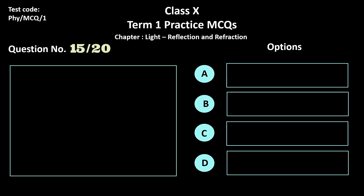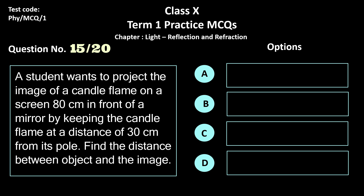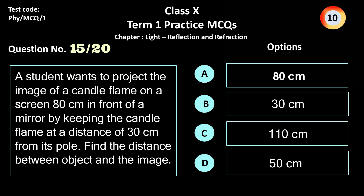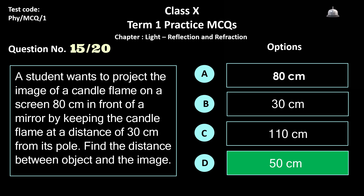Question 15. A student wants to project the image of a candle flame on a screen 80 cm in front of a mirror by keeping the candle flame at a distance of 30 cm from its pole. Find the distance between the object and the image. Options: a) 80 cm, b) 30 cm, c) 110 cm, and d) 50 cm. The correct answer is option d, 50 cm.